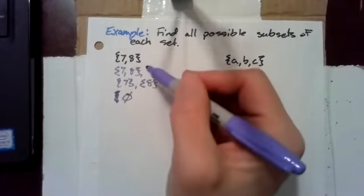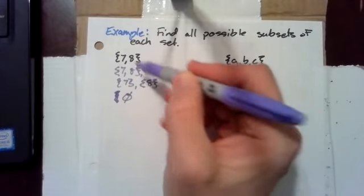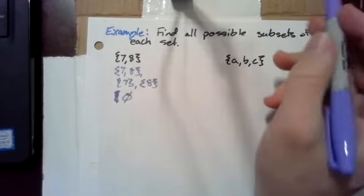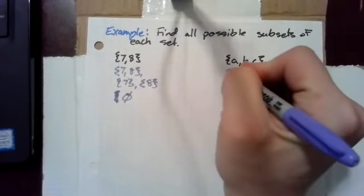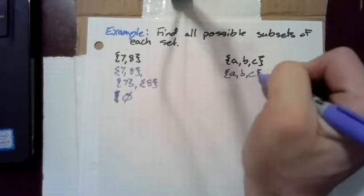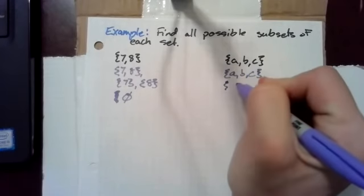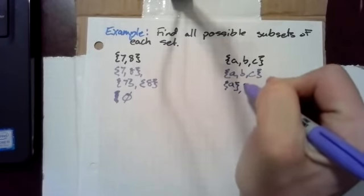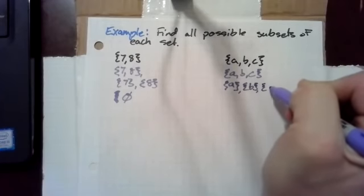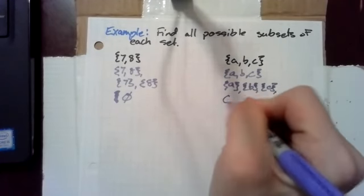So, this has four subsets. The initial set, a set that contains each of the elements in the initial set, and the empty set. Here, we've got something slightly different. We certainly have the original set as a subset, A, B, C, and we have the sets that contain each of the elements individually, and of course, we have the empty set as well.